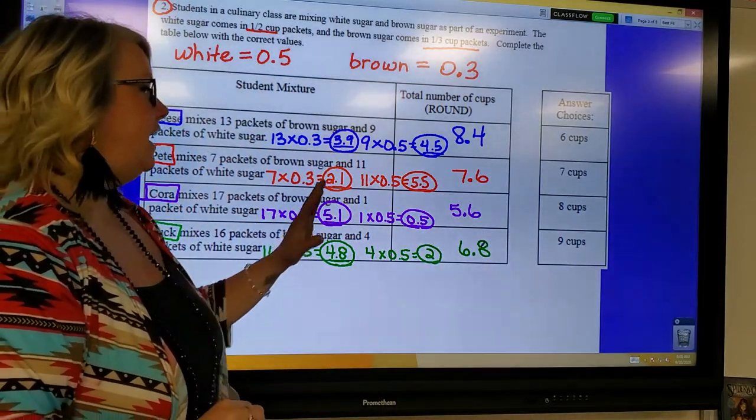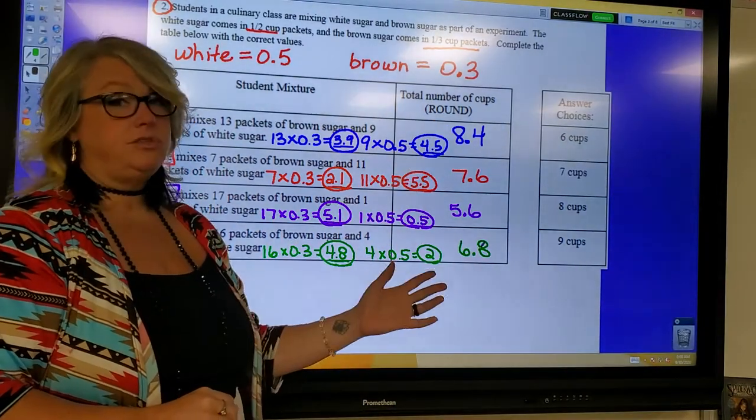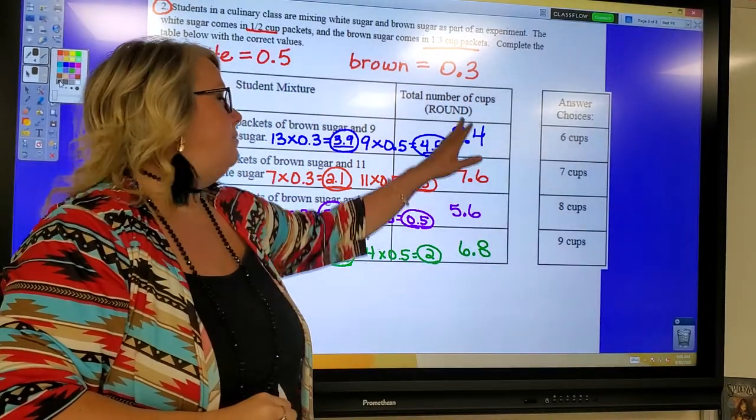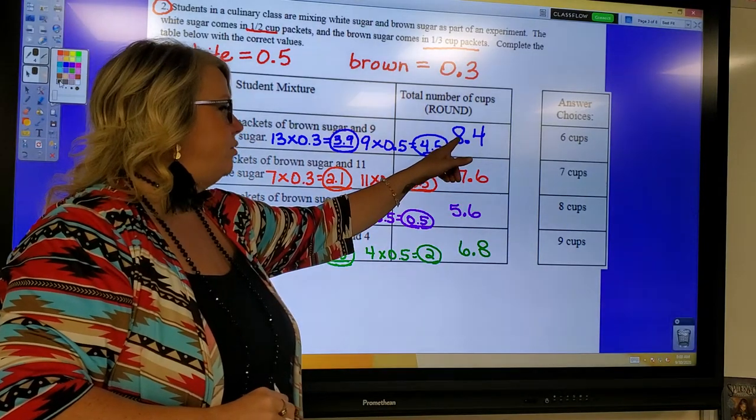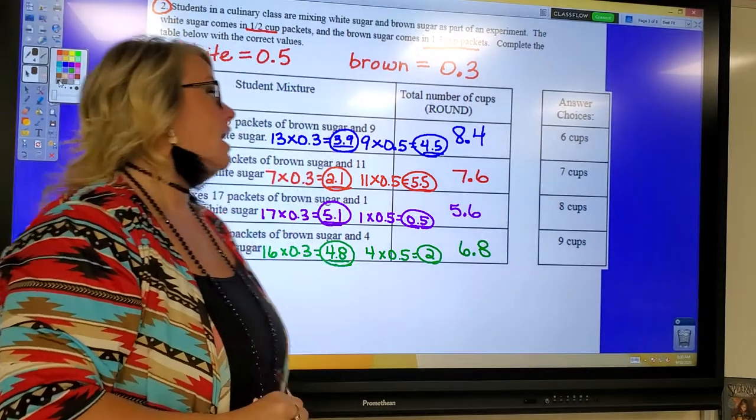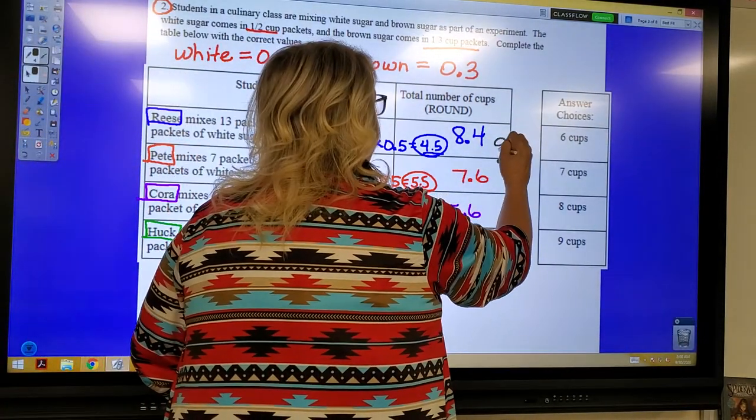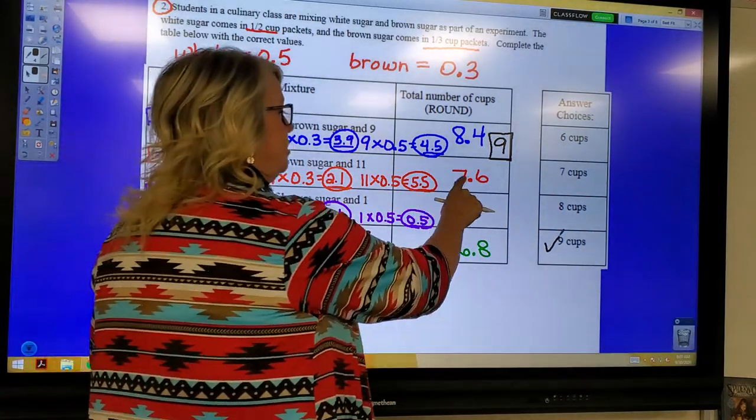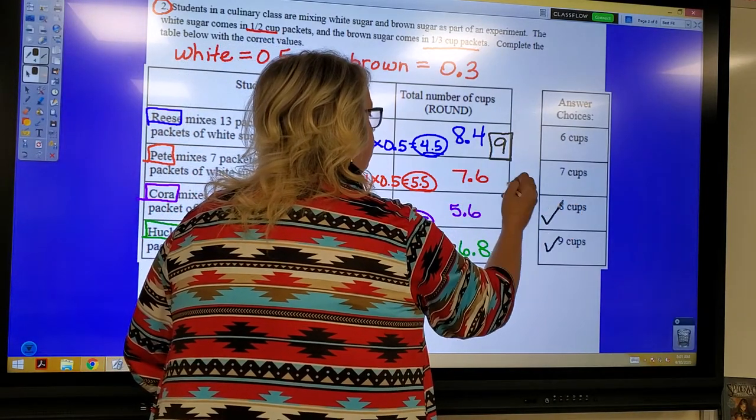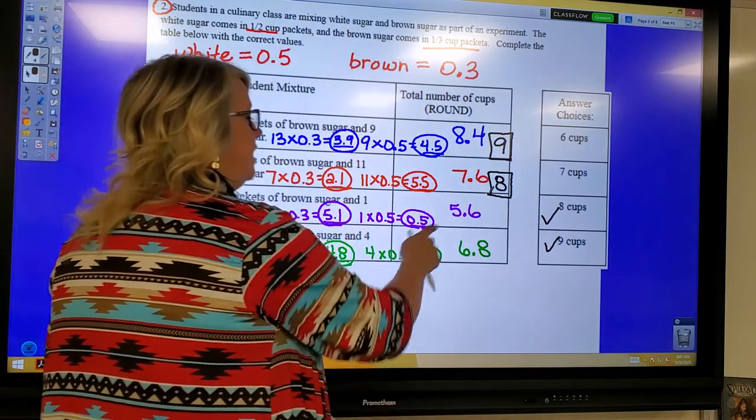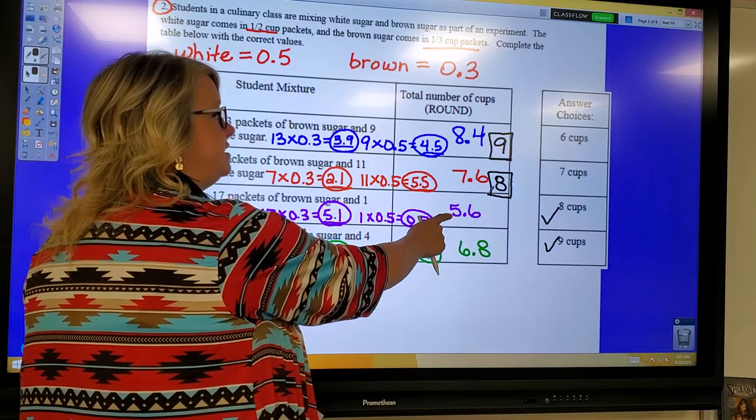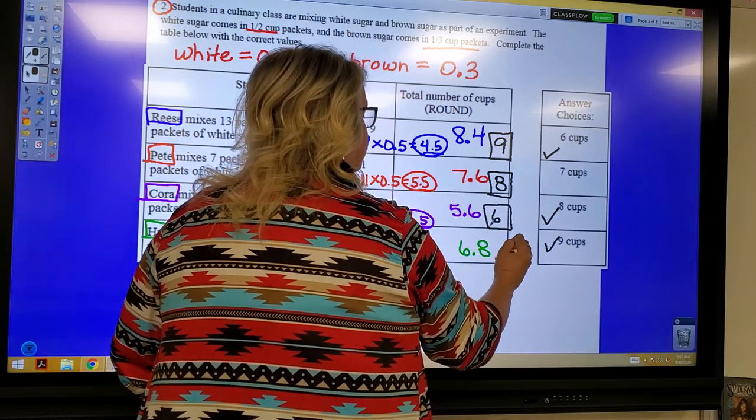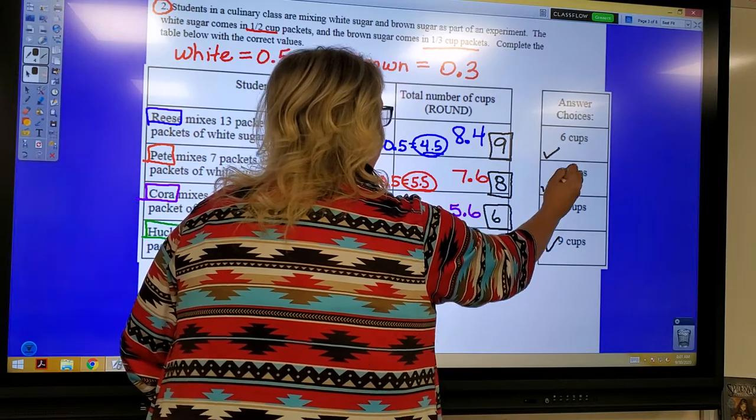Okay, now that I have all of my answers, I am going to match them over there with my answer choices, my possible answer choices. So one thing that I've noticed is my biggest answer. My biggest answer of these decimals is the 8.4, and my biggest answer choice is 9. So I'm going to say that this is the 9. Okay, so I've used that. Remember, we can only use these only once. My next highest number is 7.6. So I'm going to use my next highest over here, which would be 8. And then I have this 5.6, which is the smallest number. And the smallest number I have to choose from is the 6. So that means I'm going to match the 6.8 with the 7. And there we go.